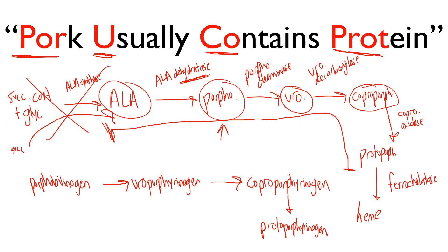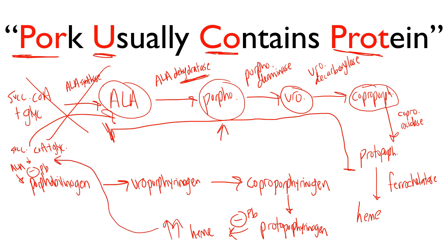The other parts of the pathway are easier to remember since they're unique. Succinyl-CoA plus glycine goes to ALA, then into porphobilinogen, and after protoporphyrinogen you just get heme. Also remember: lead inhibits ALA dehydratase and ferrochelatase, so lead poisoning blocks both those steps. And a high level of heme negatively inhibits the very first rate-limiting step — ALA synthase. Negative feedback at the first step is the most efficient approach.